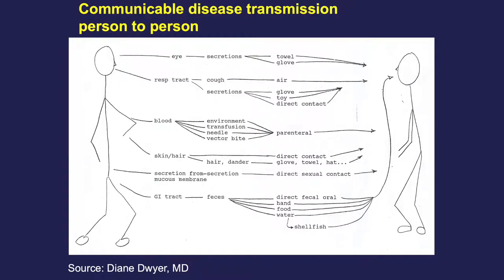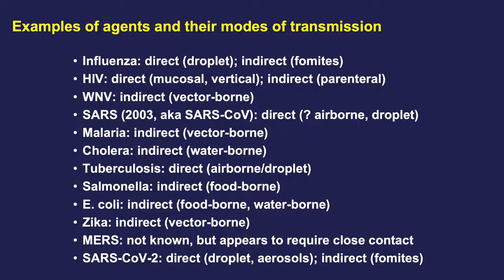This schematic shows more detail for person-to-person transmission with the different exit and entry points of pathogens. And here are some examples of infectious agents and their modes of transmission. HIV is an example of an infection with more than one mode of transmission.